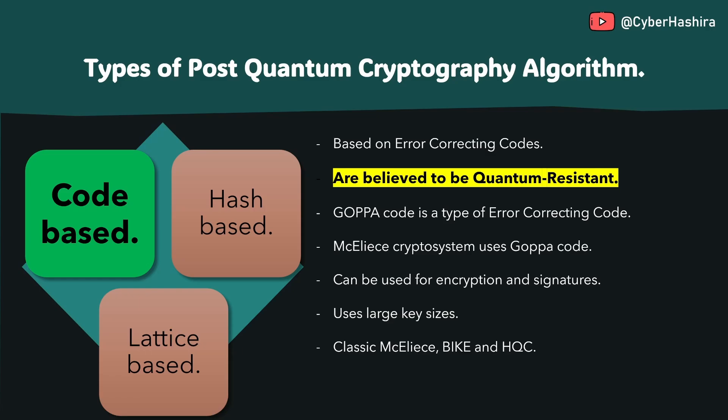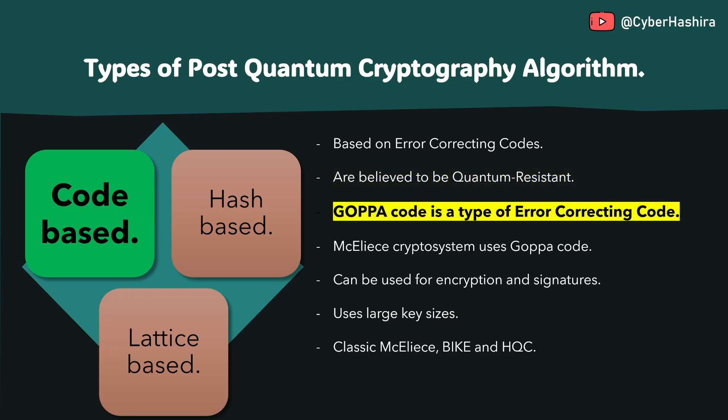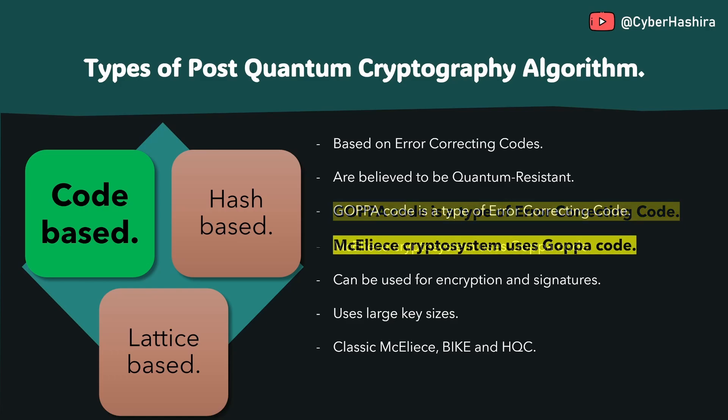The unique approach used by code-based cryptography is believed to be quantum resistant. There are different types of error-correcting techniques, and the Goppa technique is one of them. McEliece is a great example of an algorithm that uses code-based cryptography. It was developed by Robert McEliece in 1978. This algorithm is almost as old as RSA, yet it hasn't been broken.